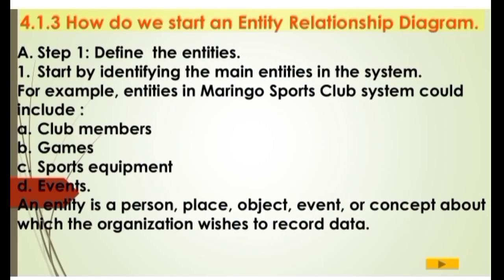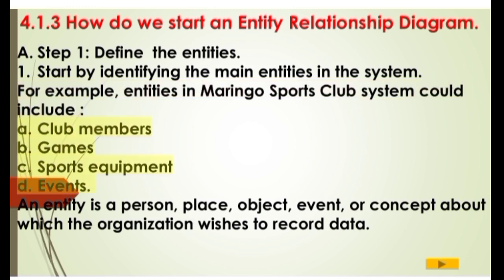How do we start an entity relationship diagram? Step 1: Define the entities. Start by identifying the main entities in the system. For example, entities in the Maringo Sports Club system could include: A. Club Members, B. Games, C. Sports Equipment, D. Events. An entity is a person, place, object, event, or concept about which the organization wishes to record data.